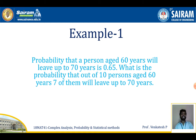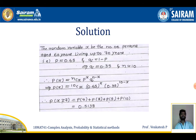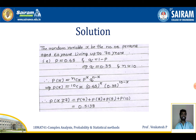From the binomial distribution we have P(x) = nCx × p^x × q^(n-x). The random variable x is the number of persons aged 60 years living up to 70 years. With p = 0.65, q = 0.35, and n = 10, replacing all these values gives P(x) = 10Cx × (0.65)^x × (0.35)^(10-x).